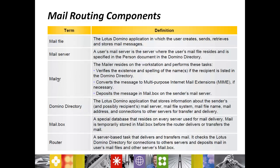The Domino directory is very important — it is the Lotus Domino application that stores information about senders and recipients, mail server names, mail file system, mail file names, addresses, and connections to other servers for transfer and delivery. Mail.box is a special database that resides on every server used for mail delivery; mail is temporarily stored in mail.box before being routed, delivered, or transferred. The router task is a server-based task that delivers and transfers mail, checks the Lotus Domino directory for connections to other servers, and deposits mail in the user's mail file and other server mail.boxes.